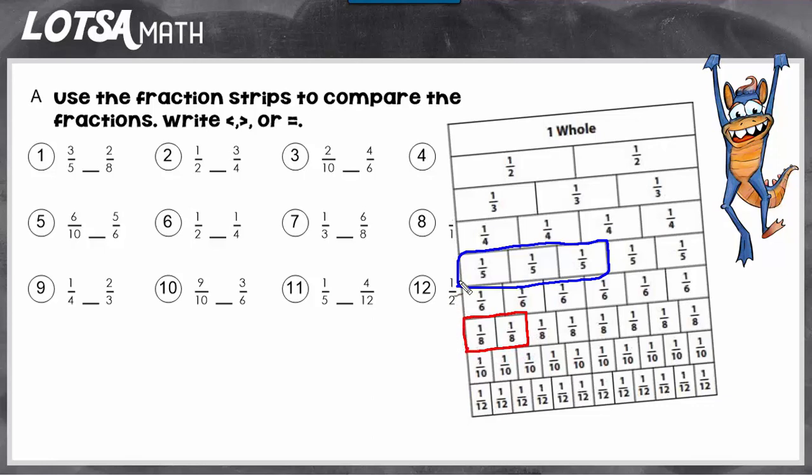Since they both started at the same point, you can tell that the longer one is the greater fraction. So three fifths is greater than two eighths.